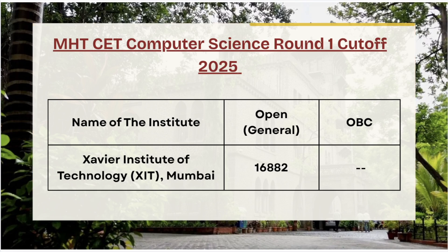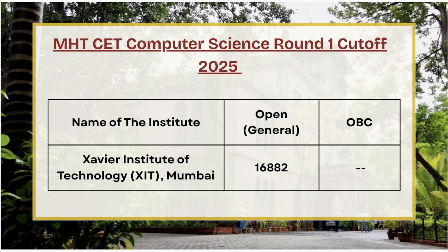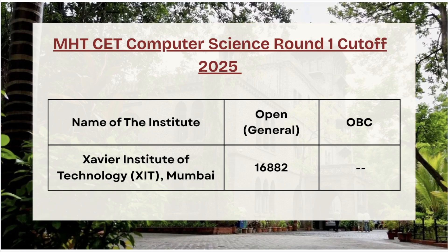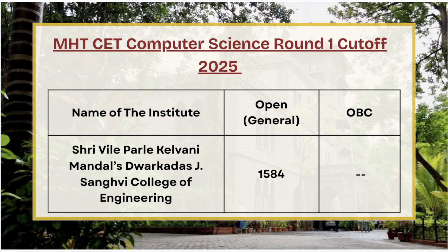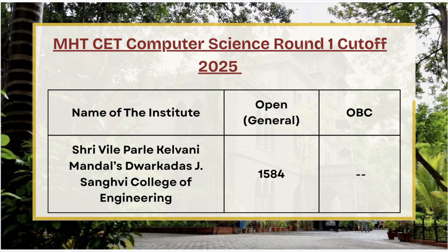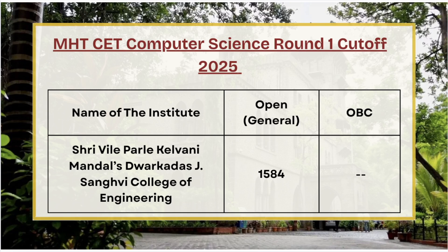Next we have Javier Institute of Technology — for open category the cutoff rank is 16,882. Next in the list we have Shri Valliparly Kalwani Mandal Dorka Das College of Engineering — for open category the cutoff rank is 1584.